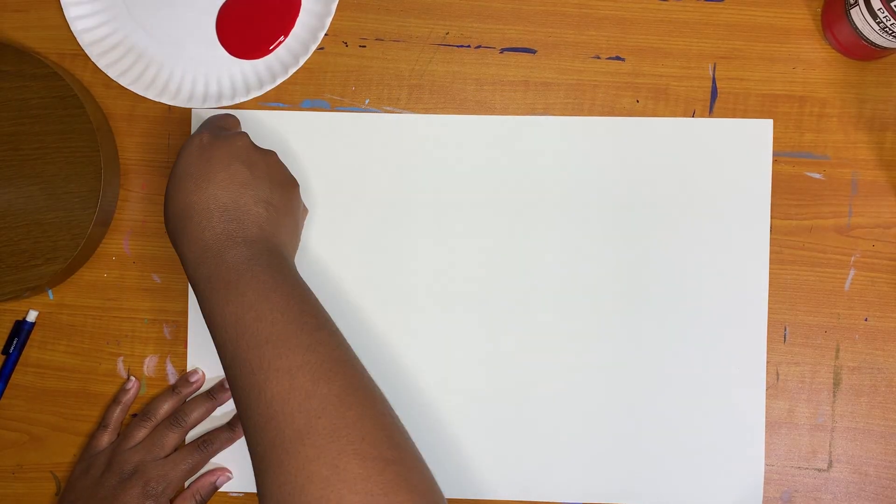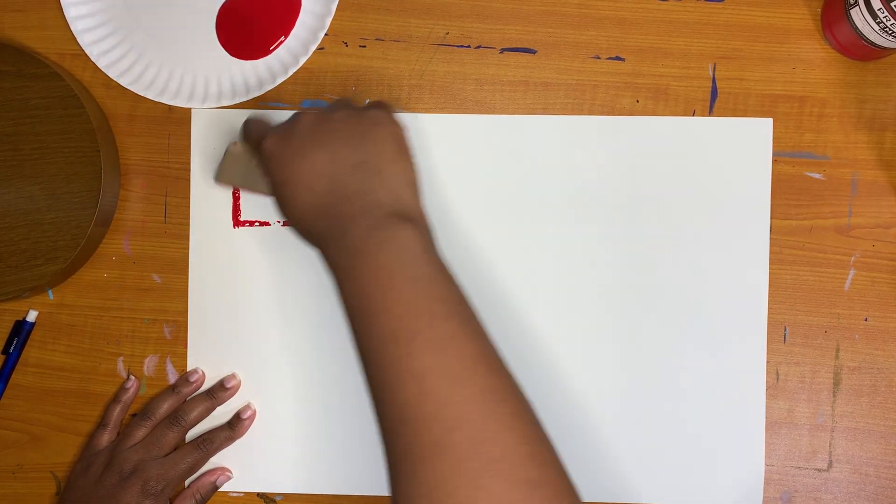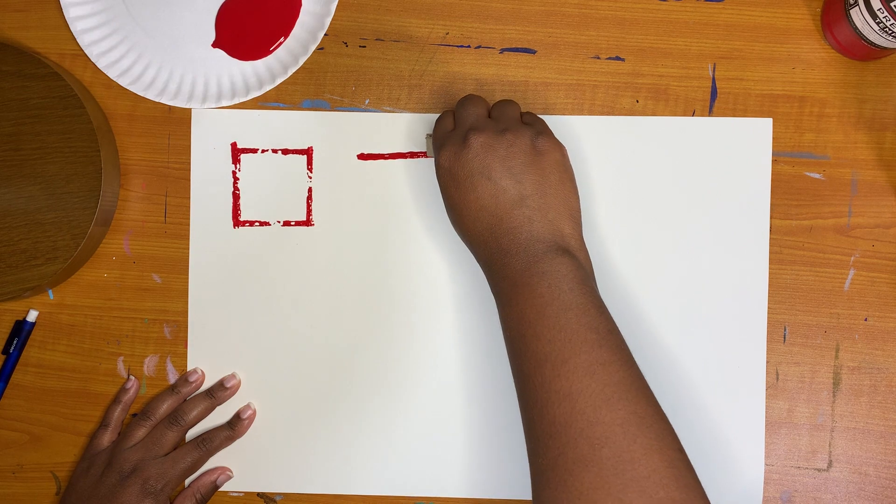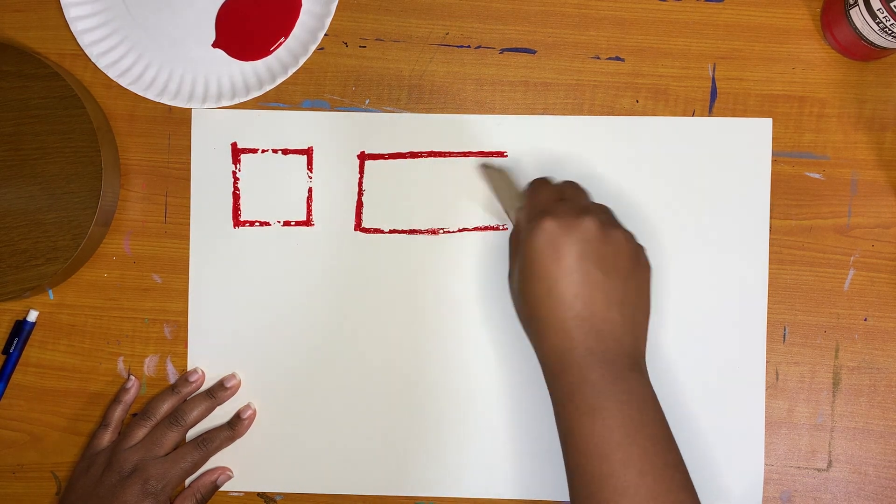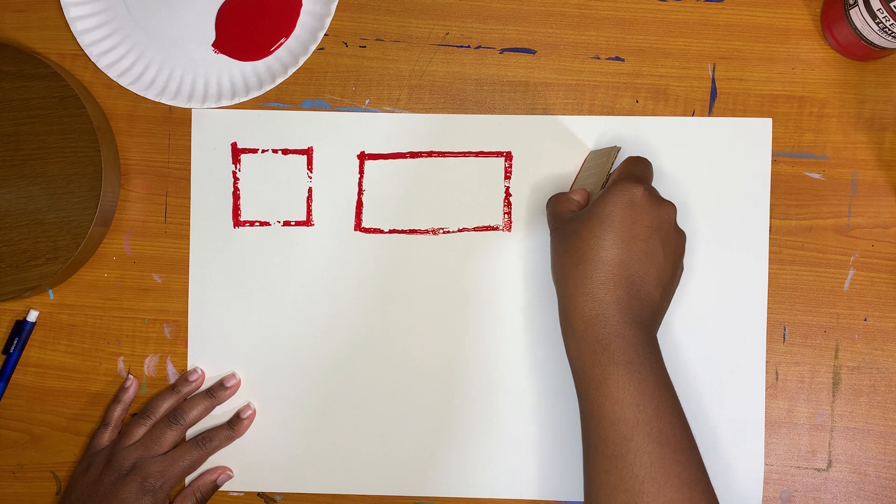You can make a square, rectangle, and triangle with a straight line tool.